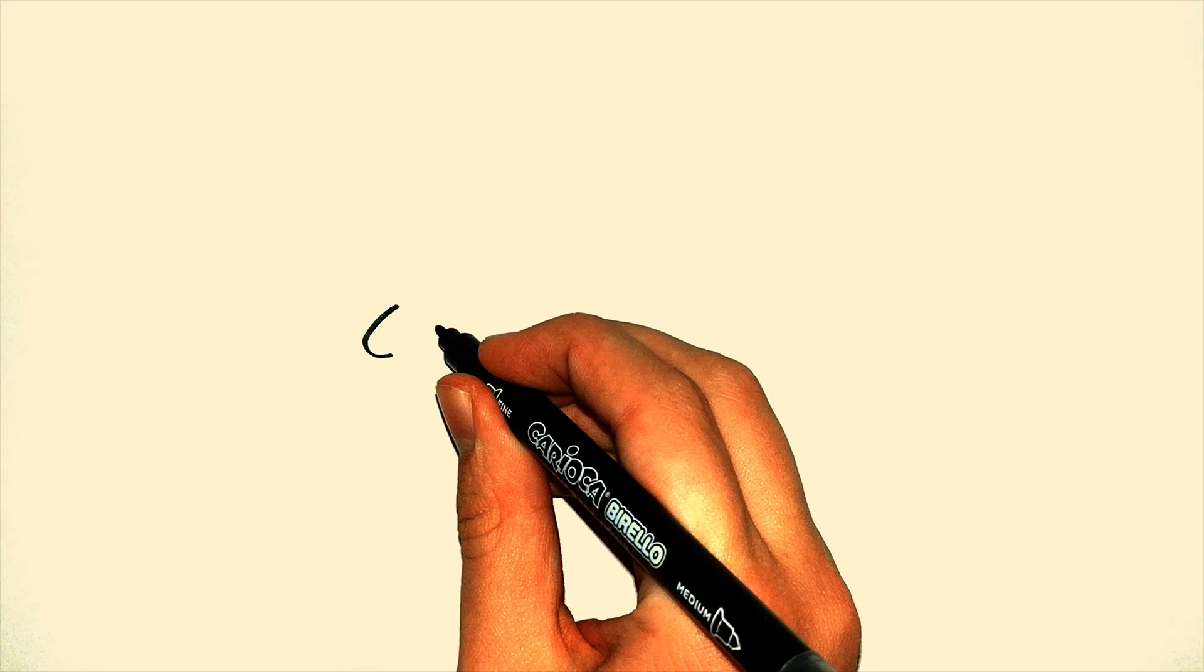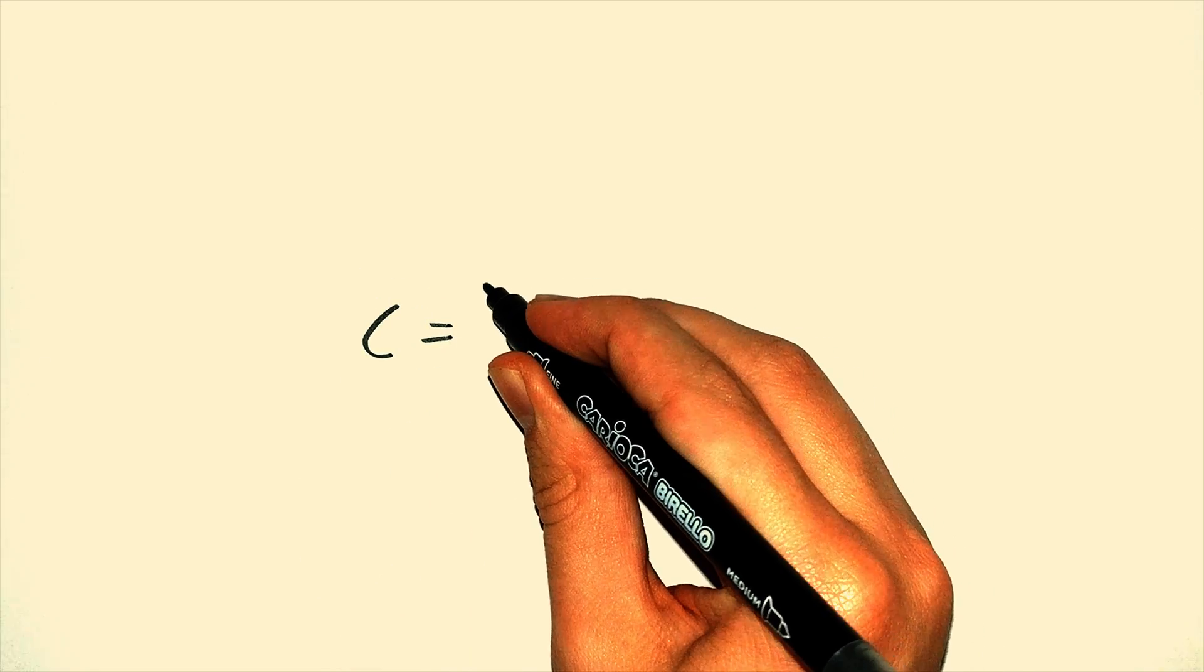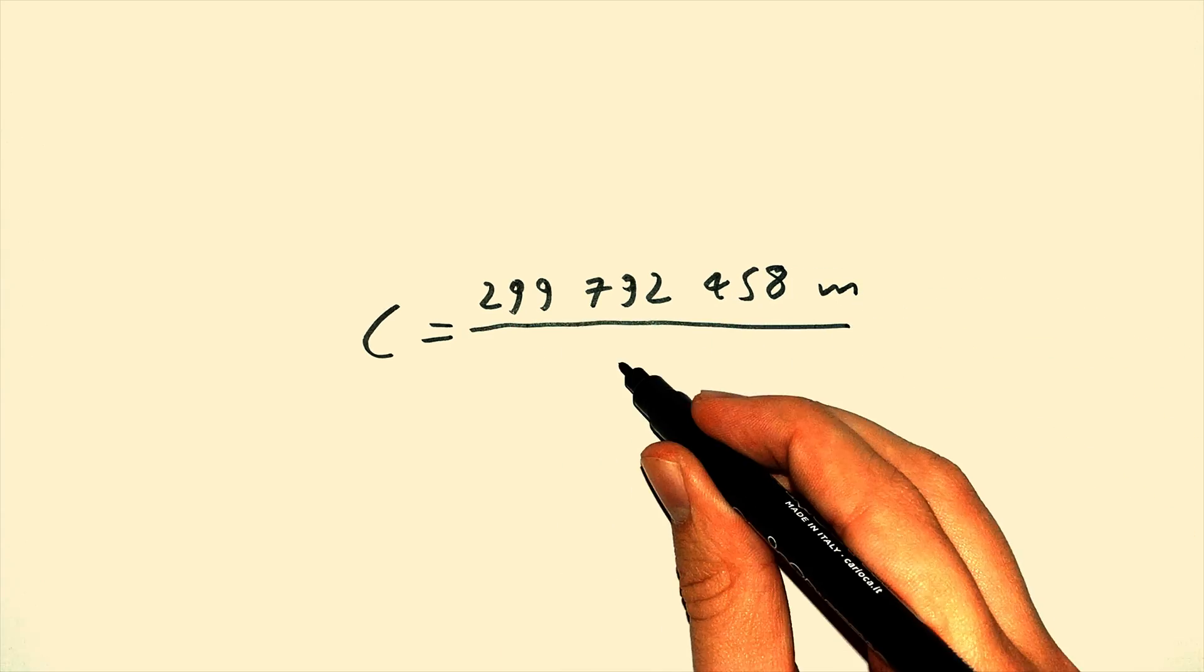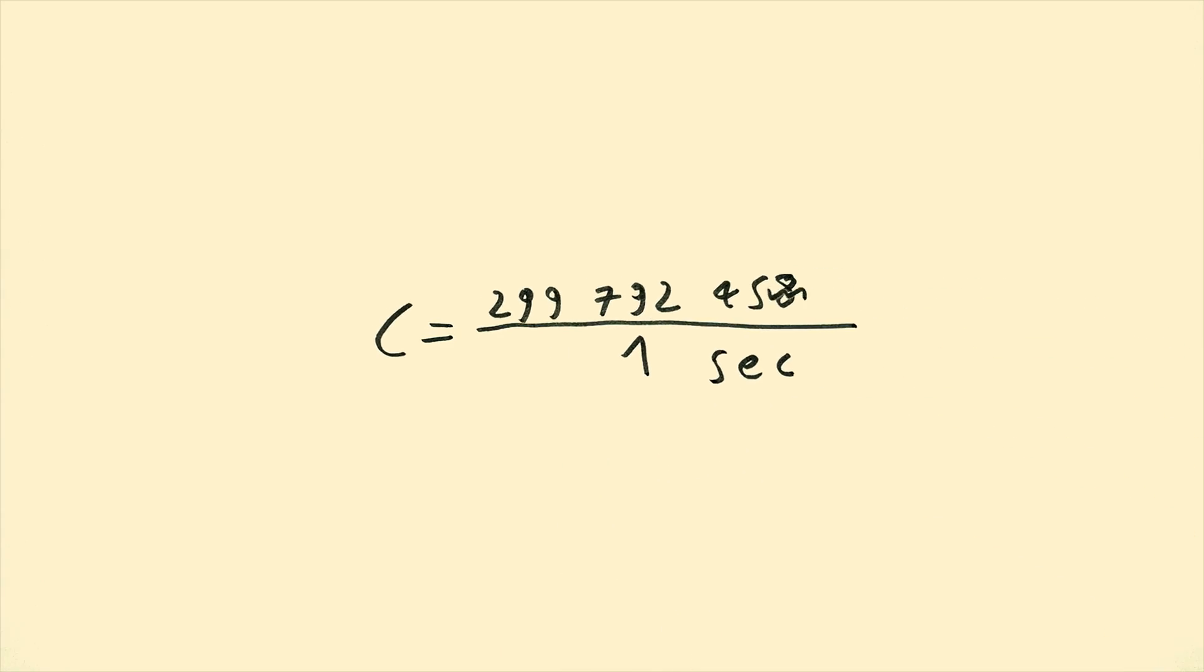So it's not light which is going by 299,792,458 meters in one second. It's the meter itself, the length which light travels in 1 over this of a second. And as a consequence of that, we get that C is 299,792,458 meters per second.